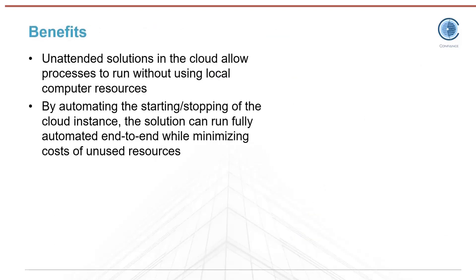So why is this particular solution beneficial? Unattended solutions mean the process runs remotely without human intervention — you can have your process run without taking up your computer's resources or having to click start and wait. All that will be done in the cloud in its own environment. By automating everything end to end — starting and stopping the EC2 instance and having Orchestrator run the process on a schedule — you can be completely hands off. You could be sitting on the beach and have it send an email with results, all while avoiding the cost of having the EC2 instance running 24-7.